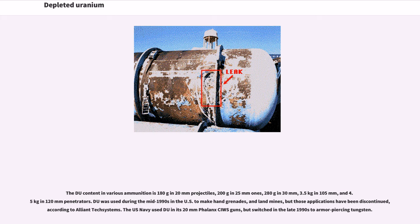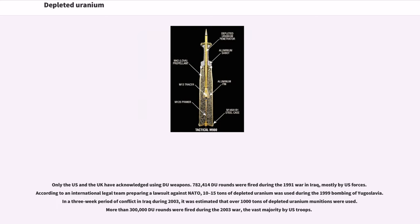Only the U.S. and the U.K. have acknowledged using DU weapons. 782,414 DU rounds were fired during the 1991 war in Iraq, mostly by U.S. forces. According to an international legal team preparing a lawsuit against NATO, 10–15 tons of depleted uranium was used during the 1999 bombing of Yugoslavia. In a three-week period of conflict in Iraq during 2003, it was estimated that over 1,000 tons of depleted uranium munitions were used. More than 300,000 DU rounds were fired during the 2003 war, the vast majority by U.S. troops.